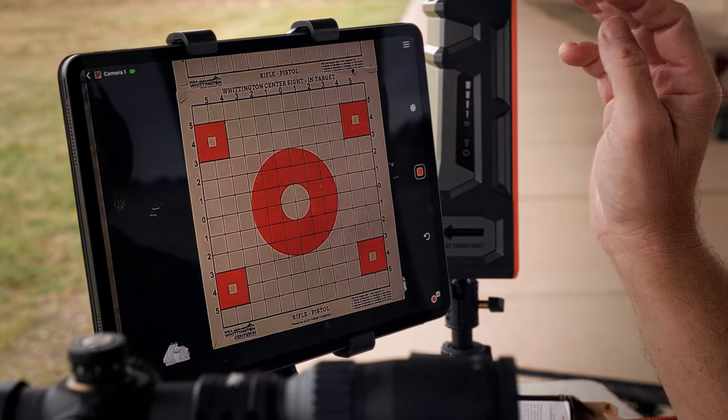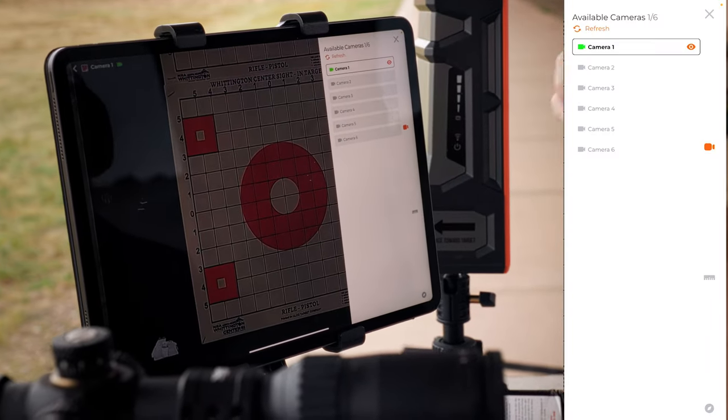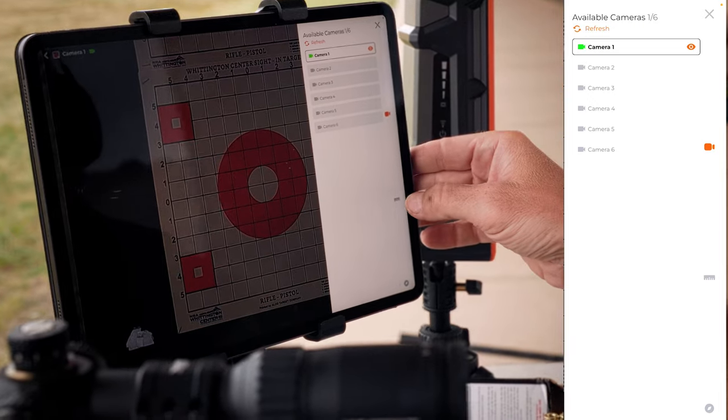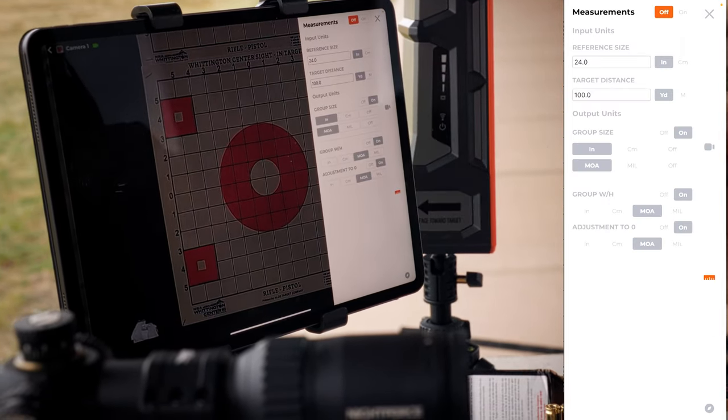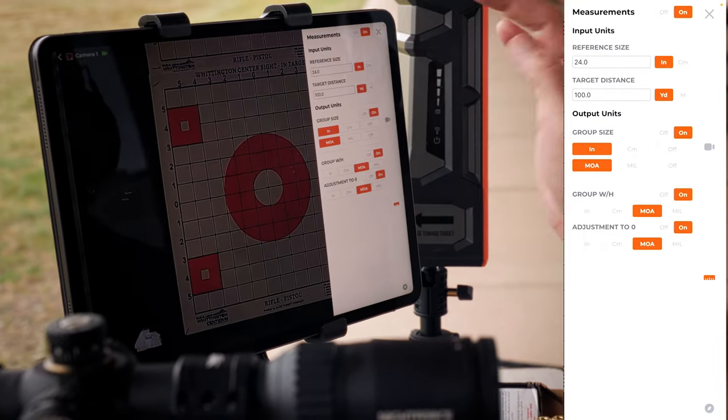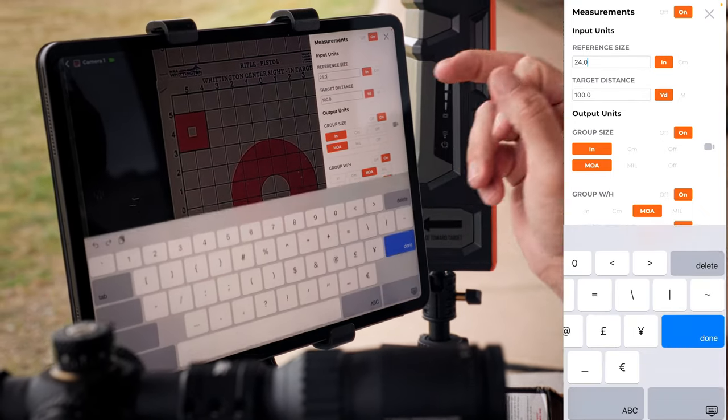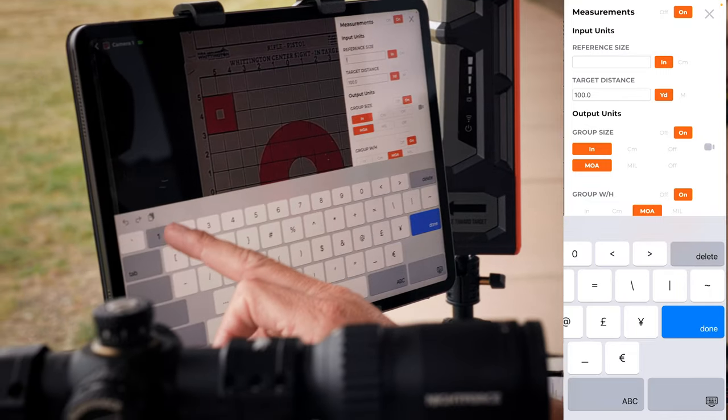To start, we're going to go in the top right corner of the screen, the three lines, and in the bottom right third of the screen is what looks like a calculator or a ruler. Click that. This is our menu bar for the shot group calculator, so we're going to turn that on. It's going to ask us for some pieces of information it's going to use to measure.